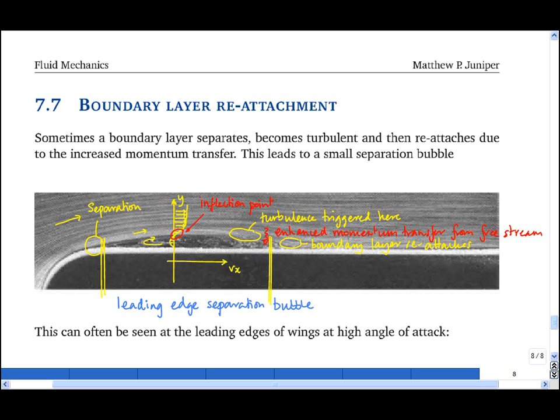This is very dangerous on an aircraft in flight, because this reattachment process around here is very delicate and therefore very sensitive to small changes, for example, in angle of attack. It doesn't take much for the flow not to reattach, in which case the leading edge separation bubble bursts and you lose all your lift over the wing very suddenly.